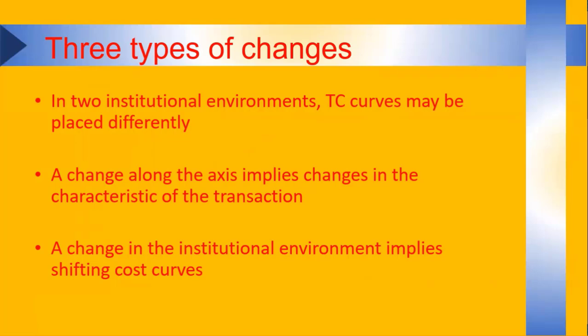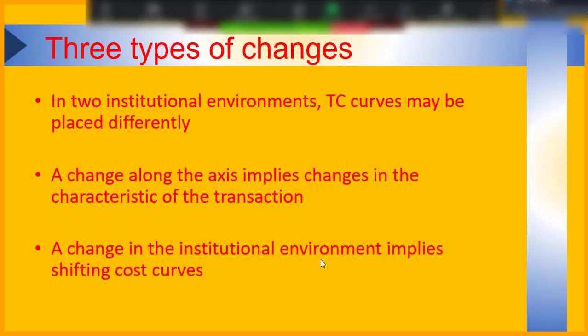So what we see is three types of analysis with this model. The first, you can compare institutional environments. So that's a comparative analysis of two institutional environments. The second is a change along the axis. So one of the drivers of the transaction cost, complexity, asset specificity, changes. The transaction, for example, becomes easier to conclude. And the third thing is that actually the institutional environment itself changes. So the rules, they change. And that leads to moving transaction cost curves.